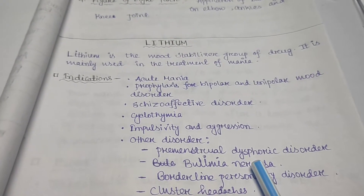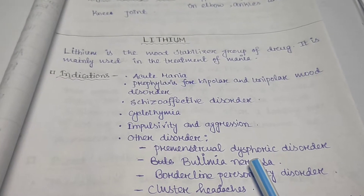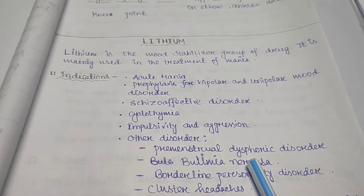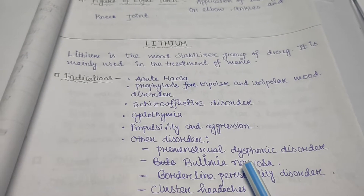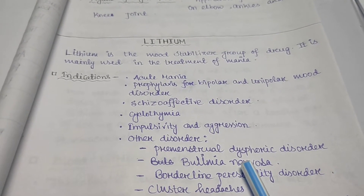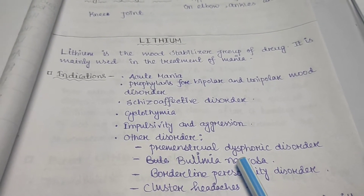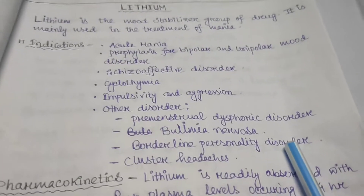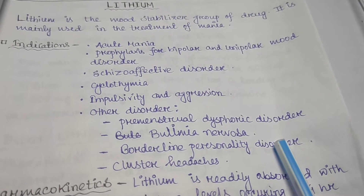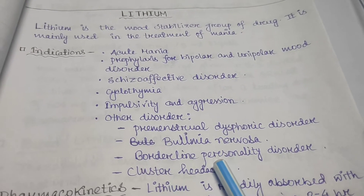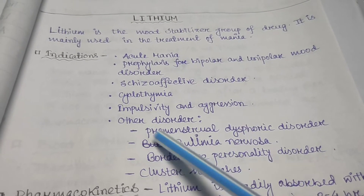Next is bulimia nervosa, which is one type of eating disorder where a person engages in excessive overeating and then, to prevent weight gain, induces vomiting, excessive fasting, or exercise. Next is borderline personality disorder, characterized by unstable moods, behavior, and relationships. Next is cluster headache. All these disorders can also be treated with lithium. This covers all the indications of lithium.